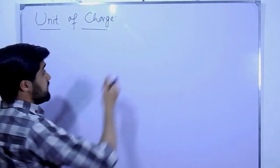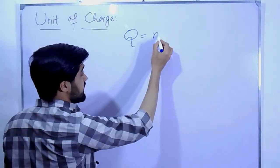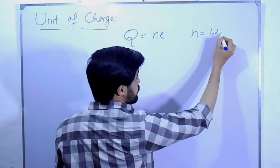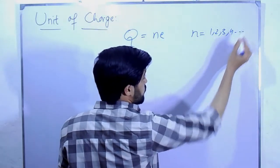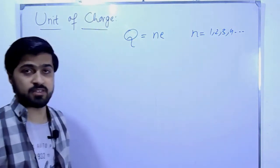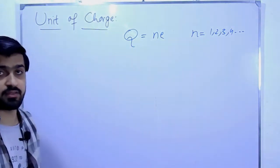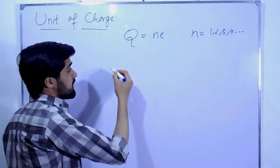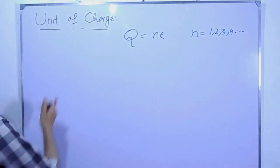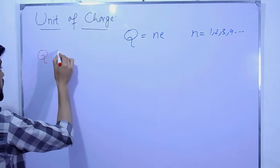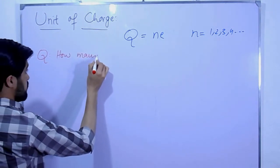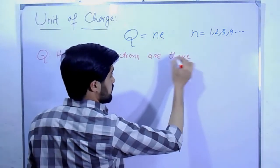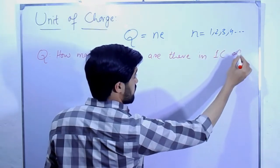The charge on any body is equal to an integral multiple of the electronic charge, where n is equal to 1, 2, 3, 4, and so on. The value can be positive or negative.